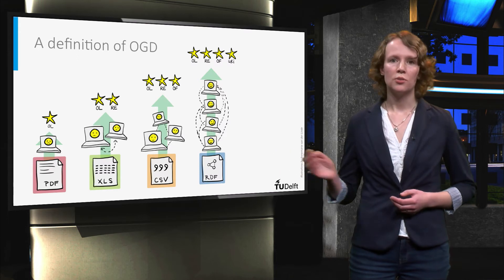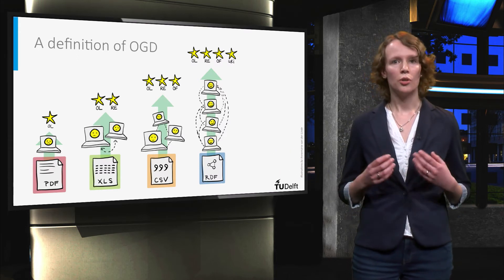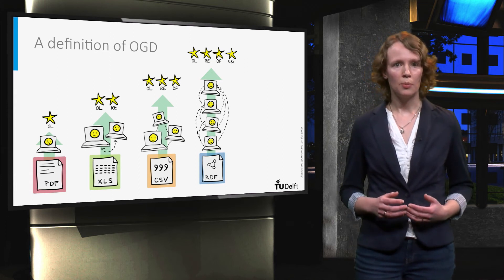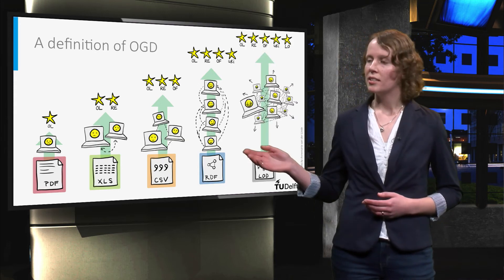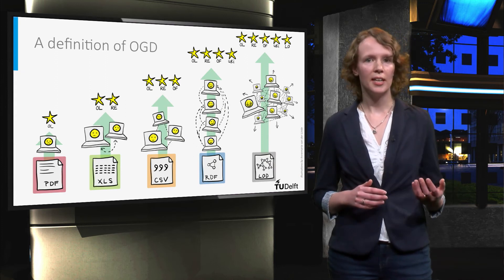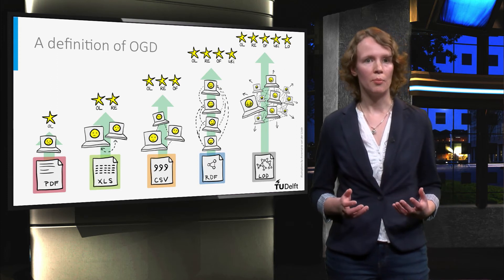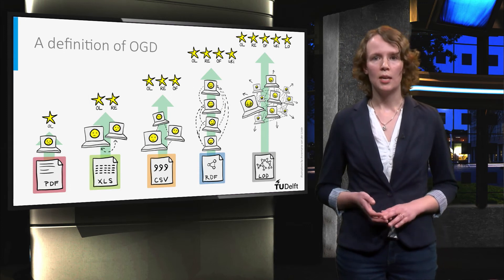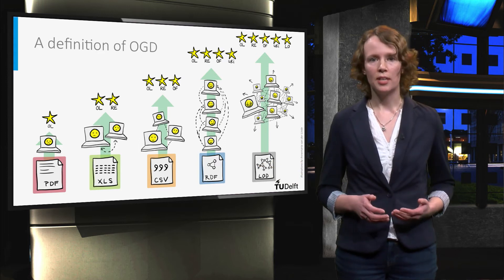Four stars are assigned to datasets which use uniform resource identifiers, or URIs, to denote things. URIs make it possible for people to refer to specific datasets. And finally, on the ideal level, open data is linked to other data to provide context, for instance through the Resource Description Framework, or RDF. The 5-star deployment scheme of Berners-Lee makes it possible to distinguish between different types of open data.